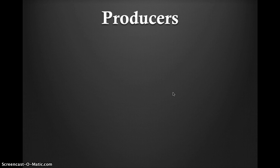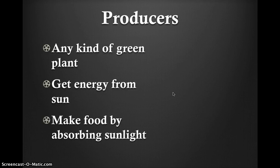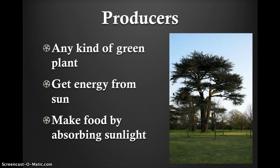Producers are typically any kind of green plant that gets its energy from the sun. Producers make their own food by absorbing energy from the sun during photosynthesis. Producers are termed autotrophs because they are self-nourished and do not depend on other species to feed. After the producers make their own food and grow, their job in the ecosystem becomes food for the consumers. Examples of producers are plants, trees, and algae.